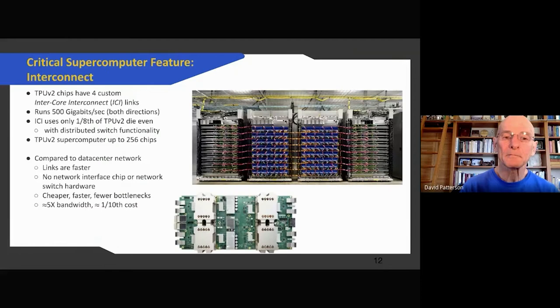A critical feature for a supercomputer is how the chips talk to each other. Google decided to build inside every chip what we call ICI or inter-core interconnect. Each link in each direction has 500 gigabits per second and there's four of them per chip. So that's pretty phenomenal, but it's not very expensive. It uses only an eighth of the die to do the distributed switch and the interconnect. The TPU v2 supercomputer scales up to 256 TPU v2 chips. So compared to the classic data center network, the links are faster, it's cheaper because there's no network interface card or switches in it. So it's cheaper, faster, and these don't form bottlenecks. Maybe it's five times faster at one-tenth the cost.